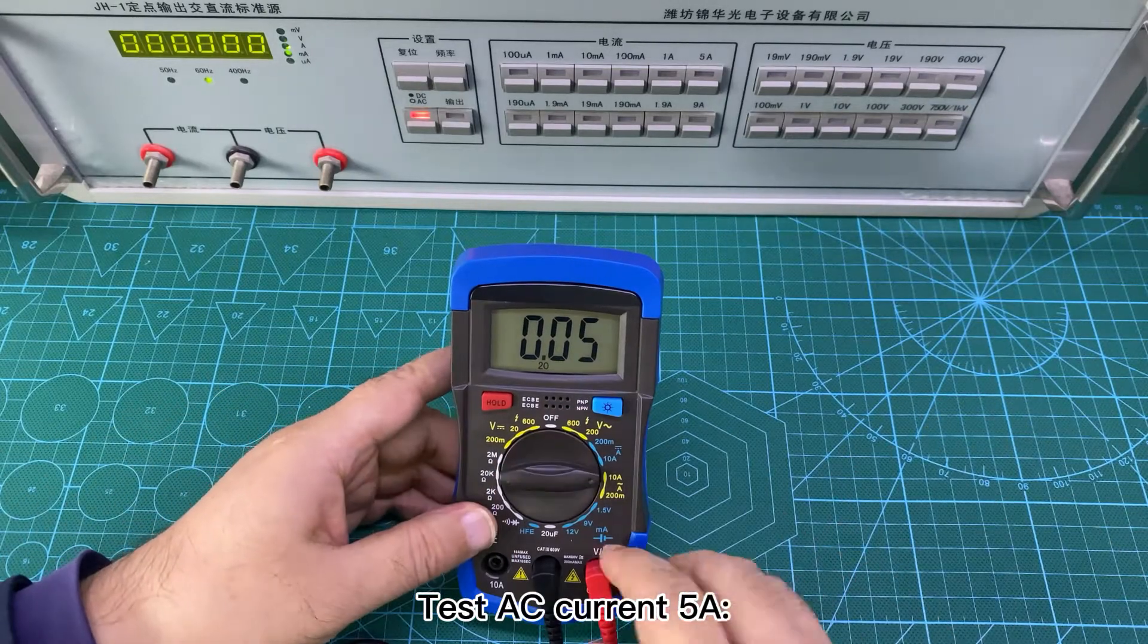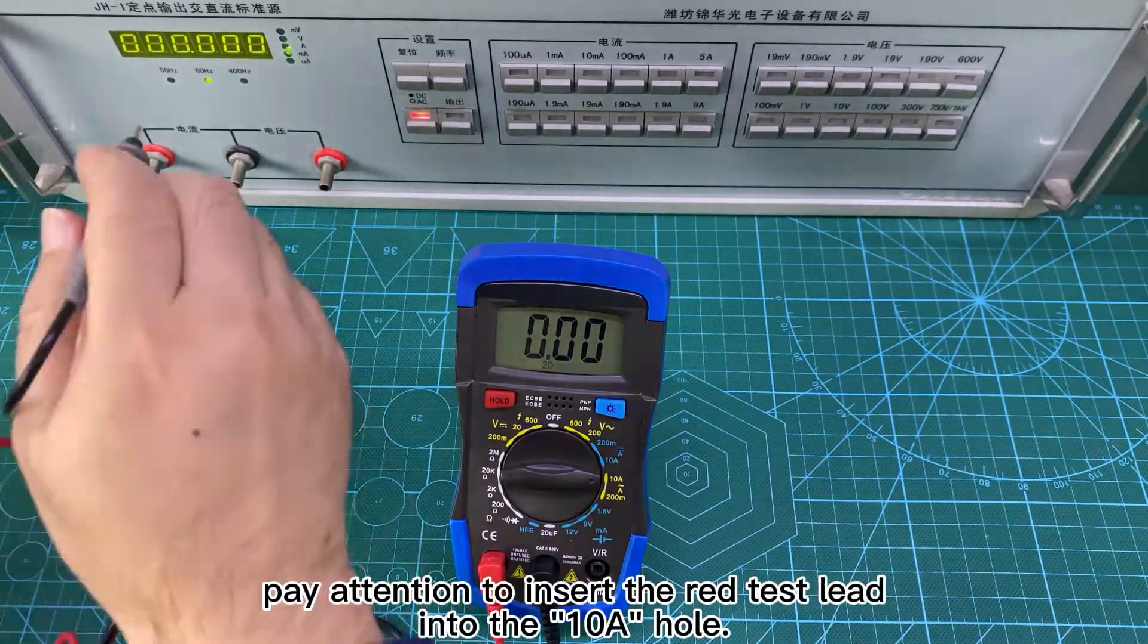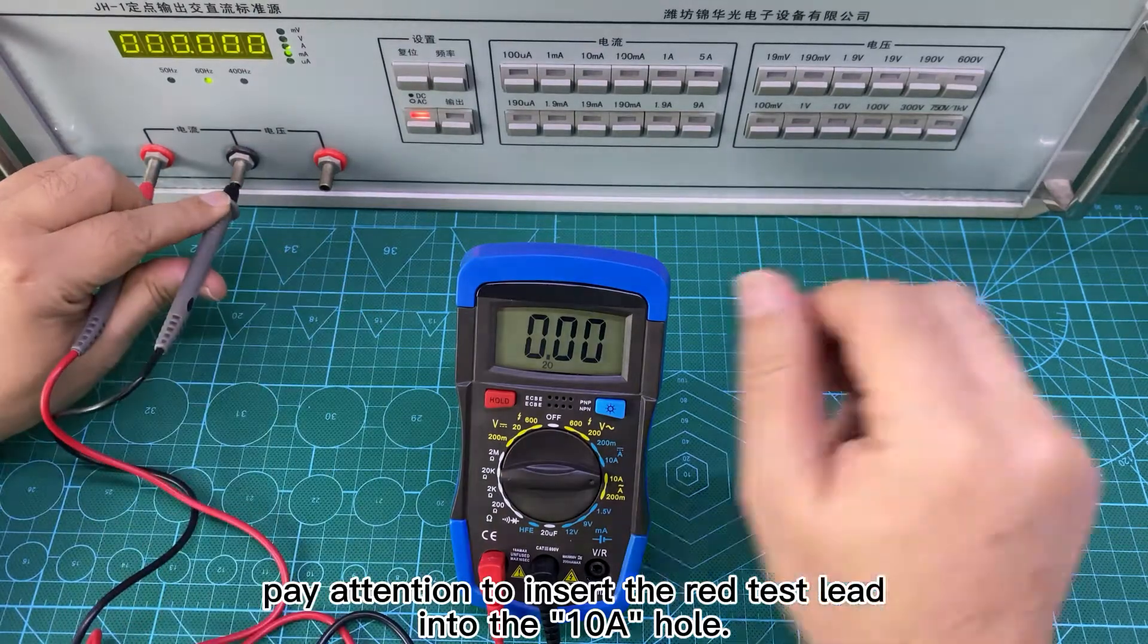Test AC current 5A. Rotate the dial to 10A. Pay attention to insert the red test lead into the TANA hole.